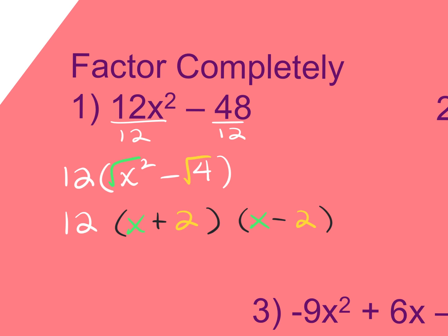Remember that after you factor something, you can multiply back your answer. If it doesn't go back to the original, you've done something wrong. Remember, multiplication is commutative, so it doesn't matter the order that you multiply back. If you want to FOIL the binomials first and then distribute the 12, you can do that.